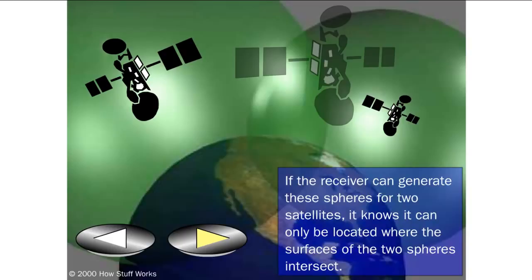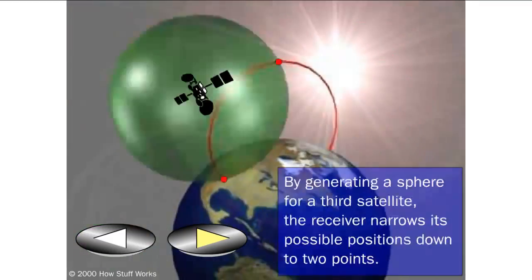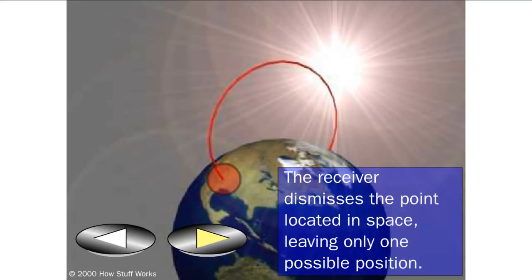If the receiver can generate these spheres for two satellites, it knows it can only be located where the surfaces of the two spheres intersect. The two spheres overlap in a ring of possible receiver positions. By generating a sphere for a third satellite, the receiver narrows its possible positions down to two points. The receiver dismisses the point located in space, leaving only one possible position.